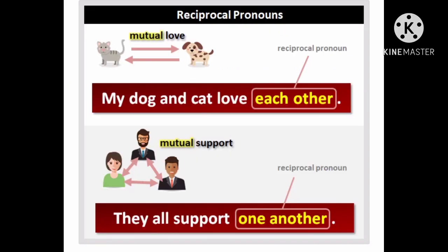Here is the first example: My dog and cat love each other. Here, 'each other' is a reciprocal pronoun and the action is mutual love. The second example: They all support one another. Here, 'one another' is the reciprocal pronoun and the action happening is mutual support among all the involved parties.